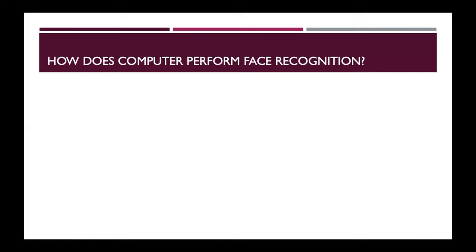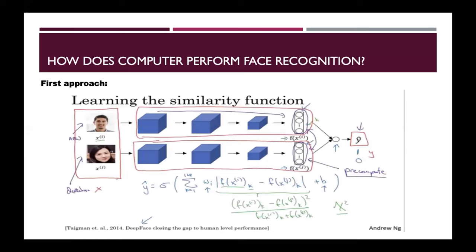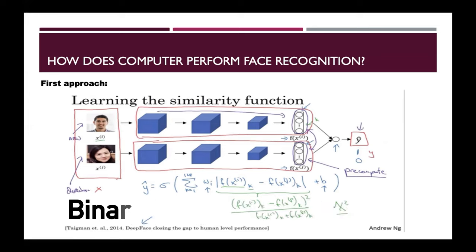You might wonder how the underlying face recognition algorithm works. The first approach involves the algorithm trying to understand similarity between faces. When you pass two faces into the algorithm, it transforms the image features into embedding vectors. Both images are different, so they have different embedding vectors. These are then consolidated and logistic regression is applied on top. If the two images are of the same person, the embedding vectors produce a binary output of one; if not, the output is zero — a binary classification to determine face similarity.